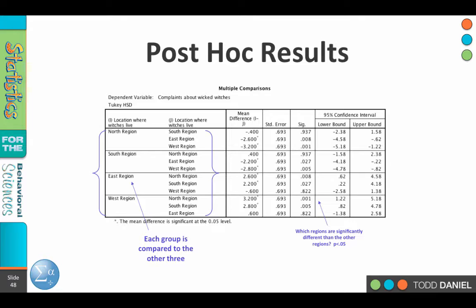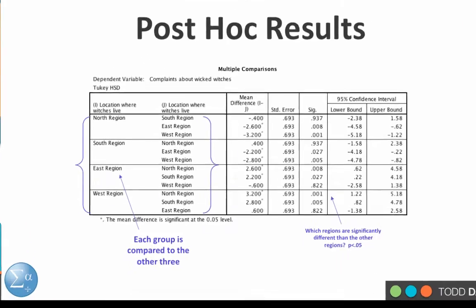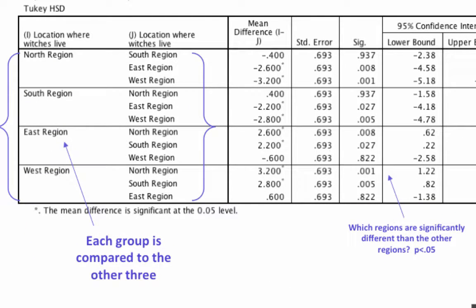Where are those differences? We need to look at our post hoc results. In these post hoc results, each region is compared to every other region. The first box compares the north region to south, east, and west. We look at significance values to determine which are statistically significantly different. North is not different from south, but it is different from east and west. South is not different from north, but it is different from east and west. East is different from north and south, but not different from west.